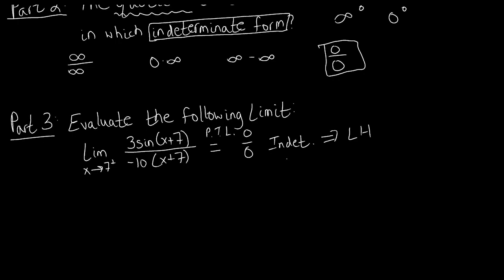So by L'Hopital's rule, these two limits are equal. We'll have the limit as x approaches negative 7 from the right of the new quotient. For the numerator, we have 3 times sine of (x + 7), where sine is acting on a composite function, so we need the chain rule. The constant multiple 3 stays out front, and we construct our derivative table.